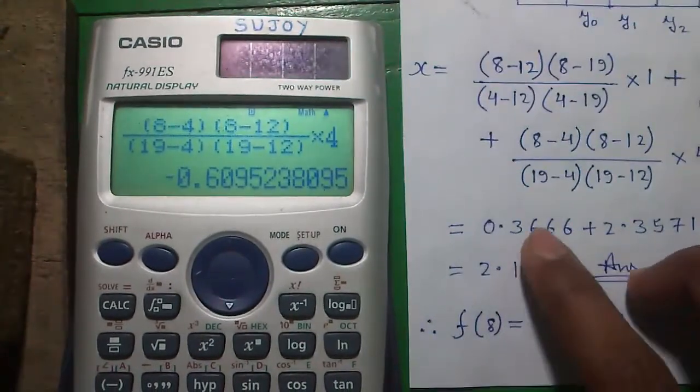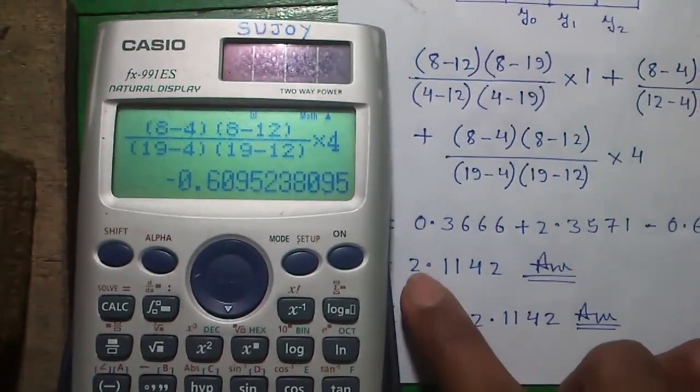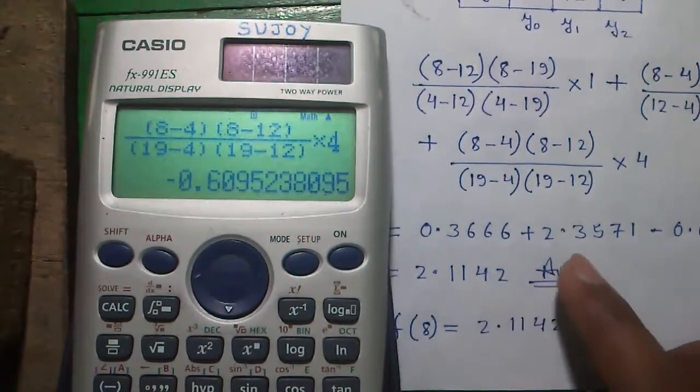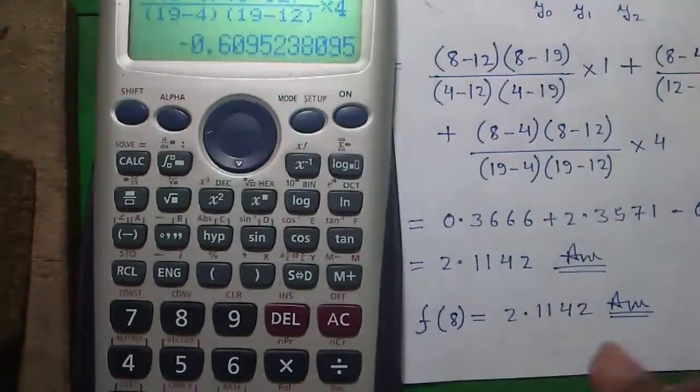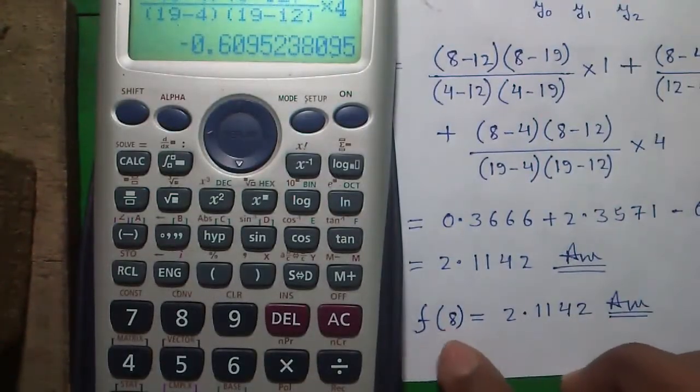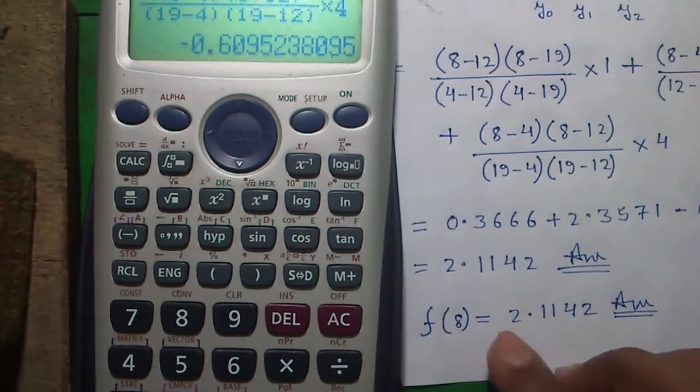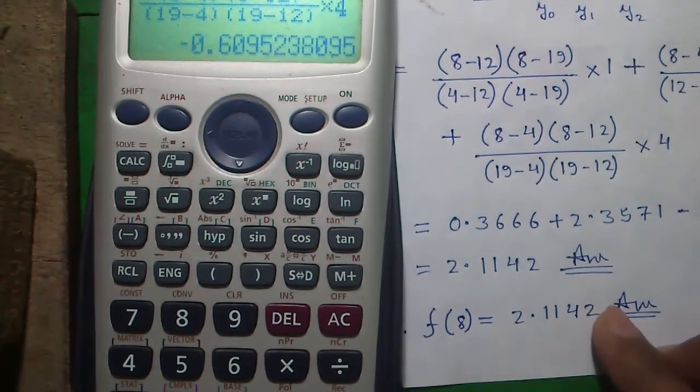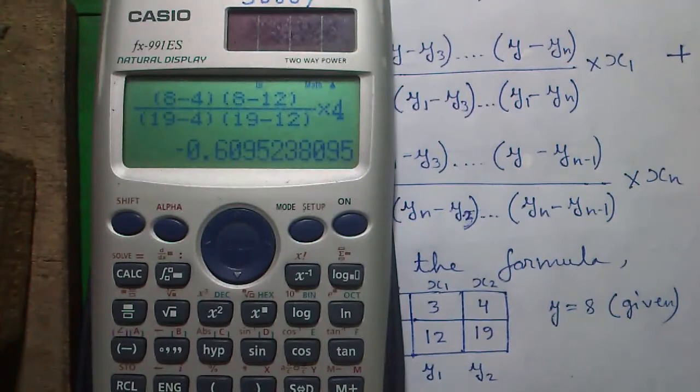So adding all three values you will get 2.1142, and this is our required answer. In some books, they prefer this notation style: f of 8 equals to 2.1142. Isn't it very easy doing the calculations on your FX-911 ES calculator?